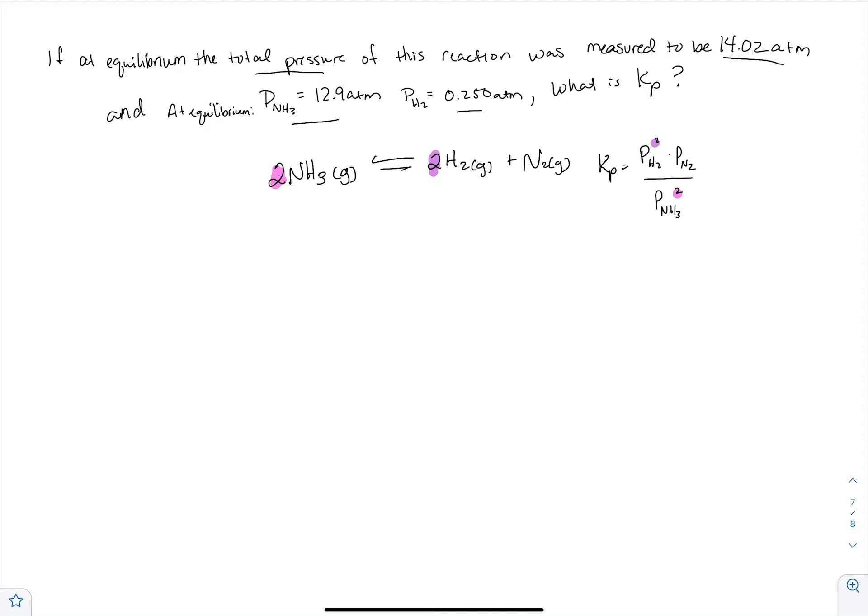If I were to solve for Kp, what I would need is, let's see, I've got this number, 0.250 atm, and that number squared times - what I don't have is N2. Then the whole thing is over 12.9 atm squared. So what's the trick to get to the N2? It's going to involve this measurement right here.